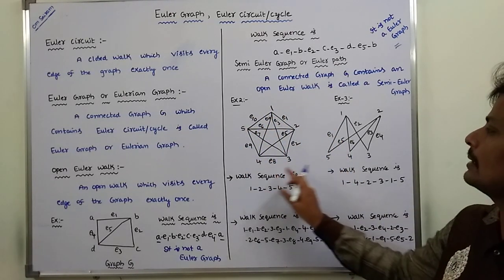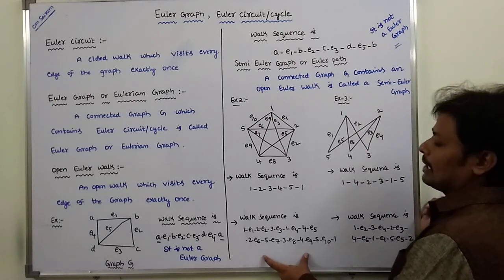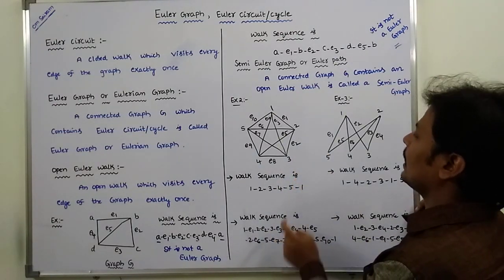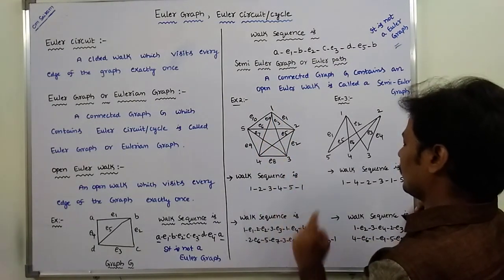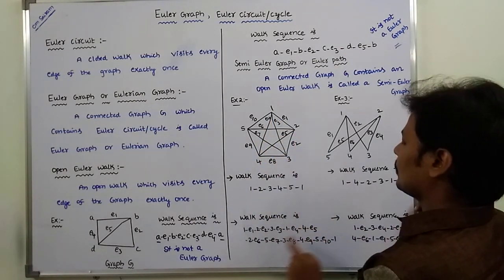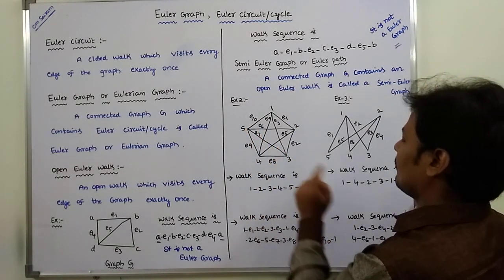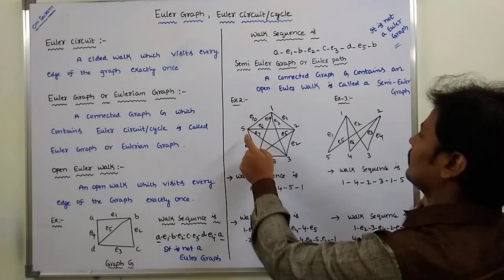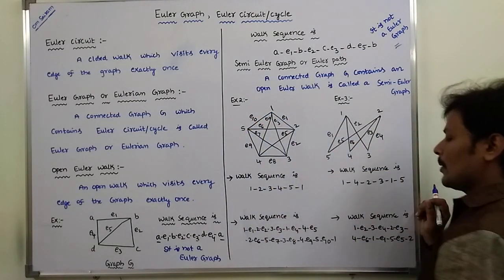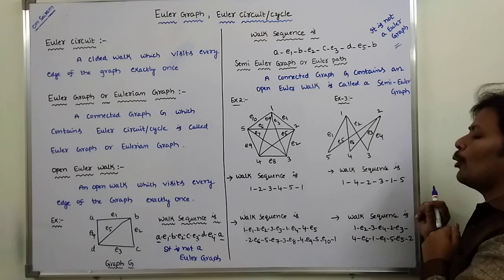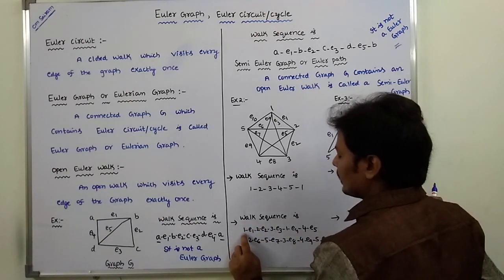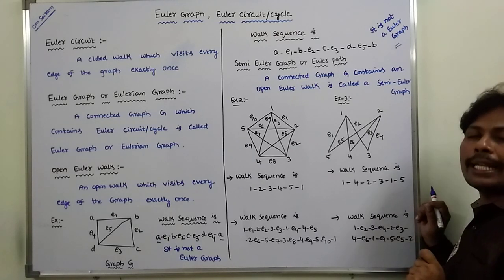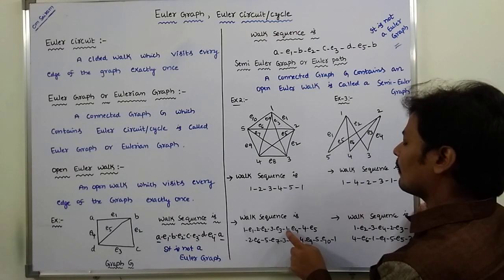Now taking this example. The walk sequence is 1, E1, 2, E2, 3, E3, 1, E4, 4, E5, 2, E6, 5, E7, 3, E8, 4, E9, 5, E10, 1. First, it is a closed walk because it starts with vertex 1 and ends with vertex 1. However, note that vertex 1 is also repeated in the middle of the sequence.